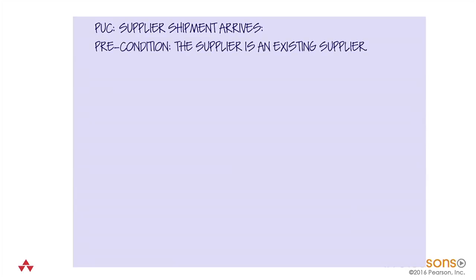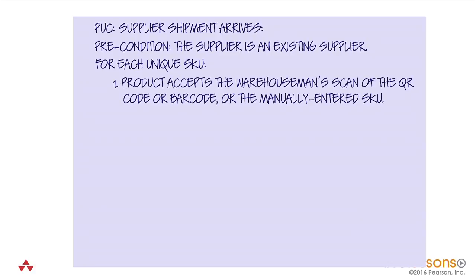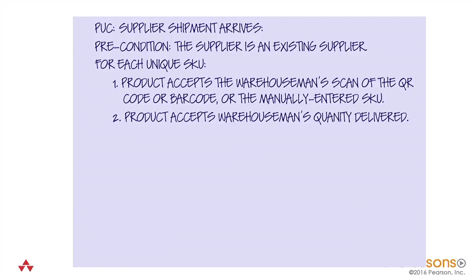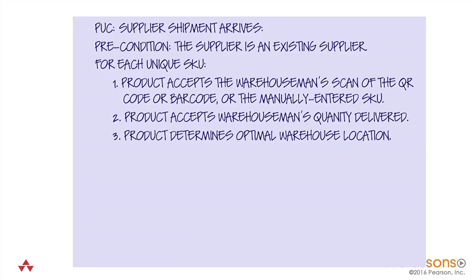Here's another one: a supplier shipment arrives. If this is an existing supplier, then for each unique SKU, the product accepts the warehouseman's scan of the QR codes, barcode, or manual entry — whichever is going to happen. It accepts the warehouseman's quantity delivered as he counts all the cartons arriving. It determines the optimal warehouse location — because different SKUs have different popularity. The product is saying 'stack it here or stack it there,' since they're stacking for retrieval: more popular SKUs go to the front and less popular ones to the back.